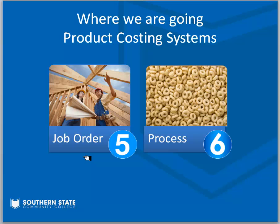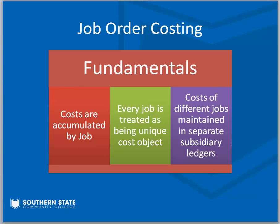A custom motorcycle manufacturer would also fit that bill — anyone doing customized individual work to customer specifications. The characteristics of a job order costing system: costs are always accumulated by the job. We may have four or five jobs going on at once and accumulate all costs for those jobs separately. Every job is treated as a unique object, and the costs of all different jobs are maintained separately. All your problems will be talking about two or three different jobs.